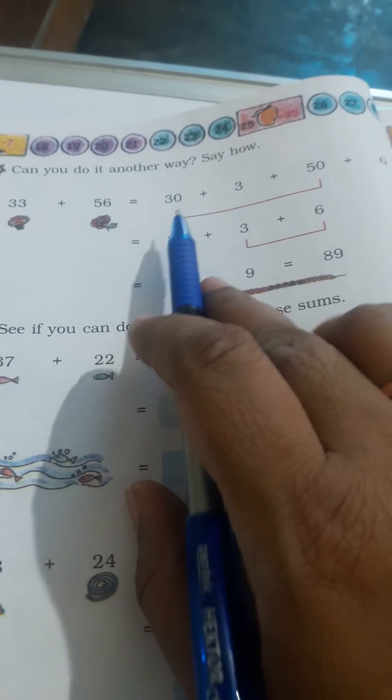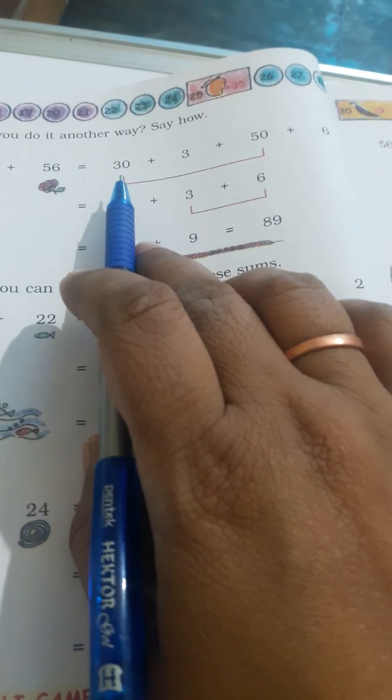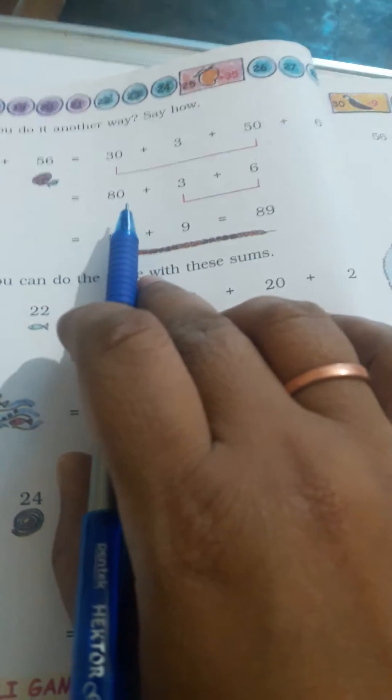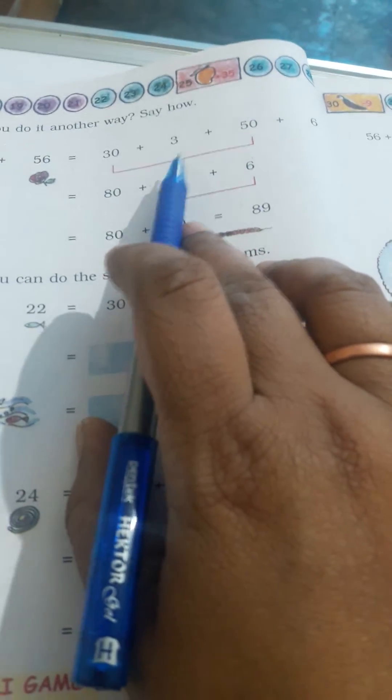We will break 30 plus 3 and 50 plus 6. Now we will simply add the tens numbers together, that is 30 and 50 will become 80. Now we will add ones numbers together, 3 and 6, so it will be 9.